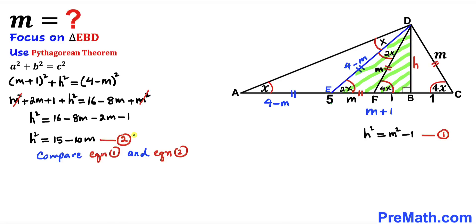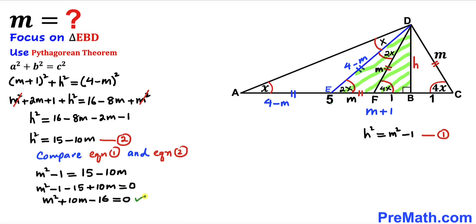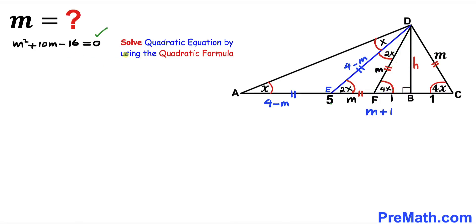Now let's compare equation 2 and equation 1. Both left-hand sides equal h², so we can write M² − 1 = 15 − 10M. Moving everything to the left side: M² − 1 − 15 + 10M = 0. Combining like terms gives us M² + 10M − 16 = 0. This is a quadratic equation, and we are going to solve it using the quadratic formula.